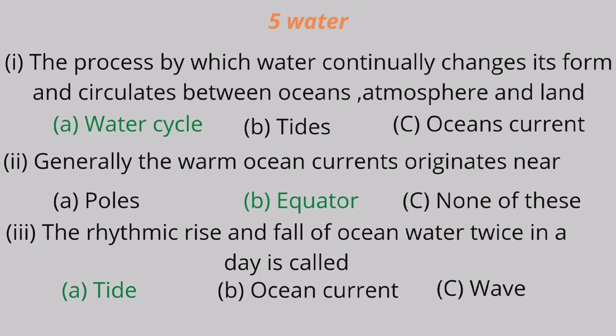Question 6: The process by which water continually changes its form and circulates between oceans, atmosphere and land is called A. Water cycle, B. Tide, C. Ocean currents. Water cycle is the correct answer.